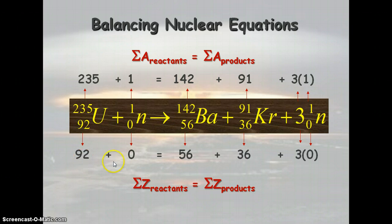And you see that 92 plus 0 is equal to 56 plus 36 plus 3 times 0, which is just 0.